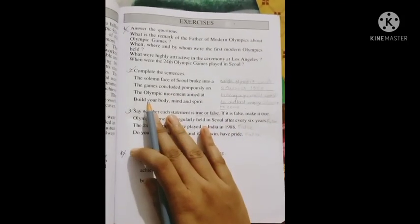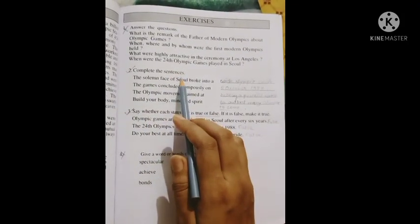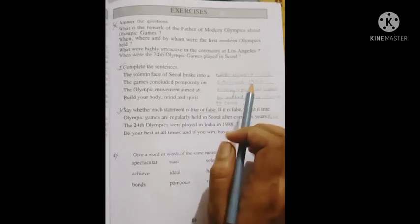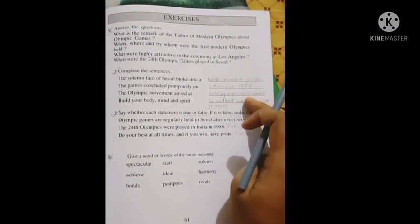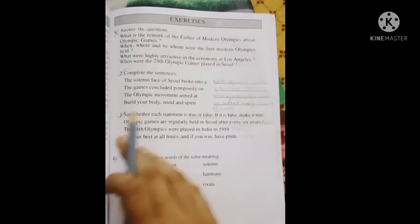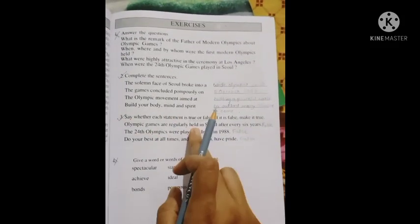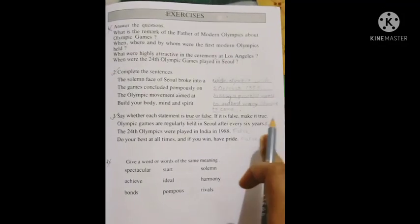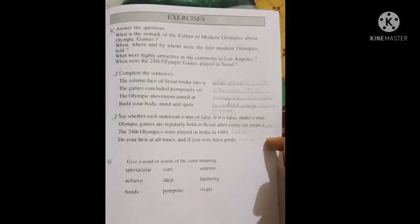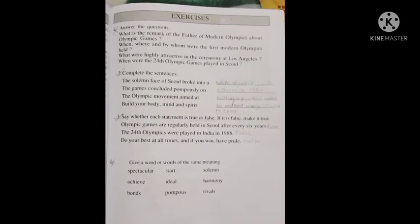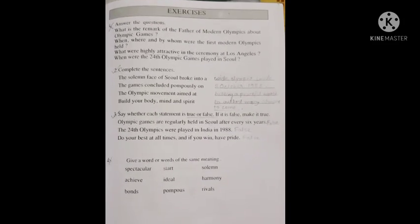So let us start. Complete the sentences. You have to complete these sentences with the information, so I have done this here for you. And question number three, write true or false. I have done this for you also. So do this homework, okay? Hope today's topic is clear. See you in the next class. Bye bye students.